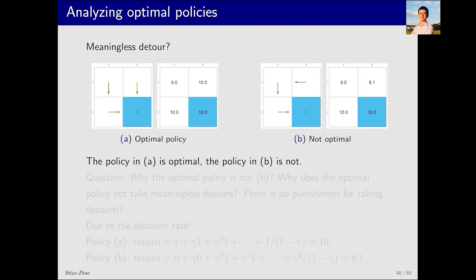Next, let's look at another example which may be tricky to understand. Initially on the left is a very simple grid world with four grids. By solving the Bellman optimality equation, we can obtain the optimal policy and the optimal state value. On the right, the difference lies in the movement being left instead of down in one state, which clearly is not an optimal policy. Its corresponding state value is smaller than that of the optimal policy, confirming it is not optimal. But why isn't this considered an optimal policy? Why does taking such a detour make it non-optimal?